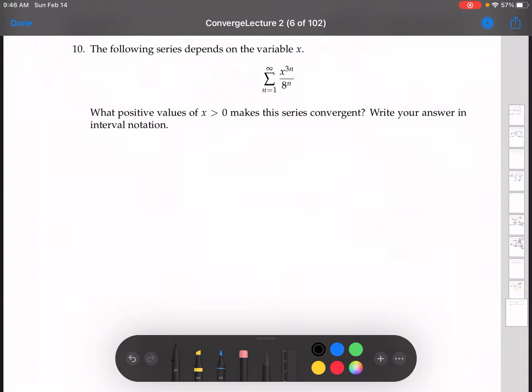All right, here's a slightly more difficult one, very similar to the previous video. We have a series that depends on a variable x, and we want to find all of the positive values of x that make this series converge. The answer is to be an interval.